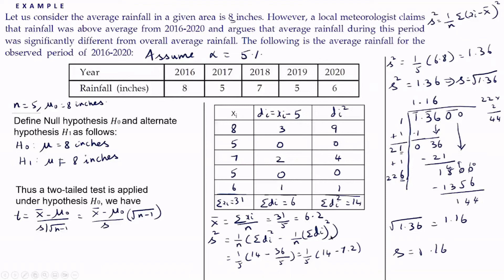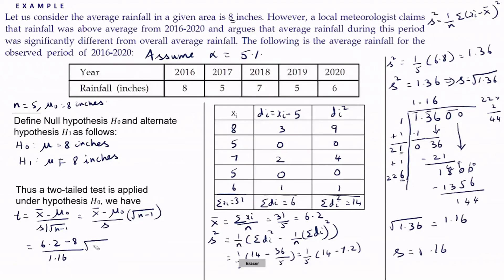So we got x̄ = 6.2 and s = 1.16. There is also a video on how to find the square root of a number; the link is available in the description. Now let us substitute the values into the formula: t = (x̄ − μ₀) / (s / √(n−1)) = (6.2 − 8) / (1.16 / √(5−1)) = −1.8 / (1.16 / √4).